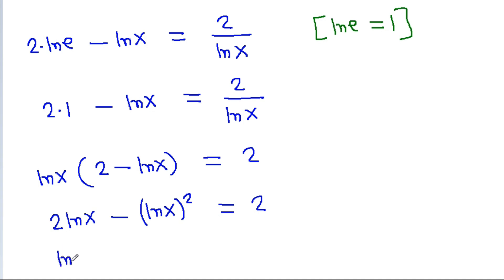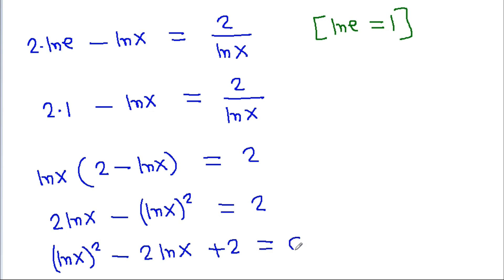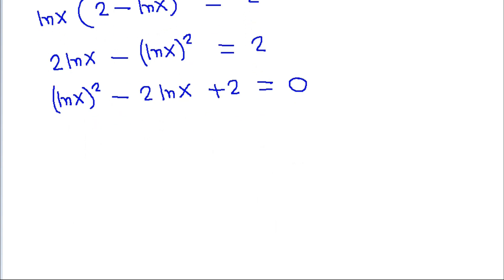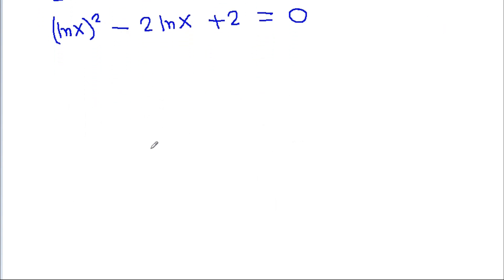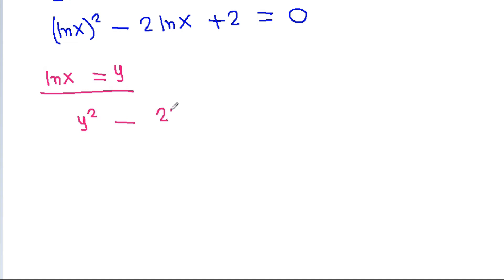Rearranging gives (ln(x))² minus 2·ln(x) plus 2 equals 0. Now if we let y equal ln(x), then the equation becomes y² minus 2y plus 2 equals 0.